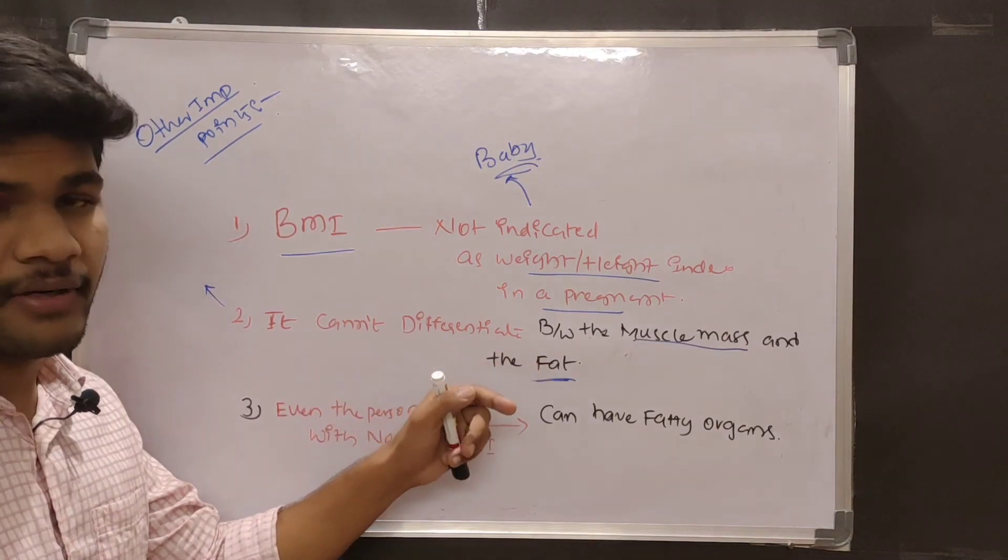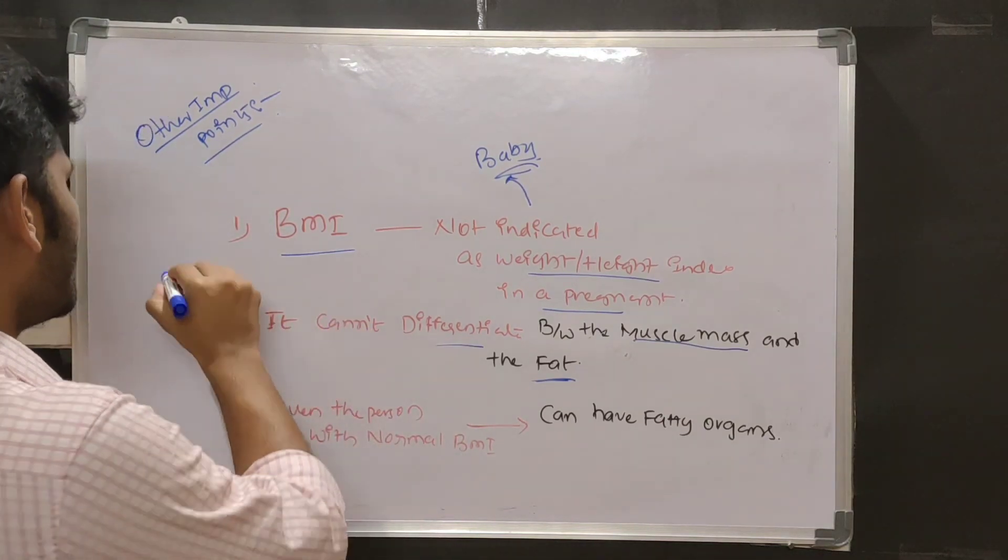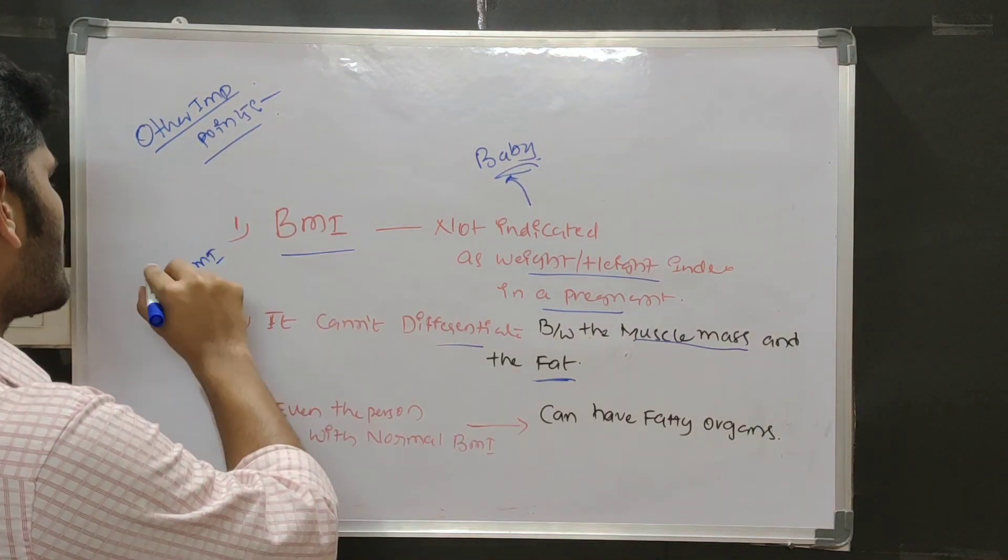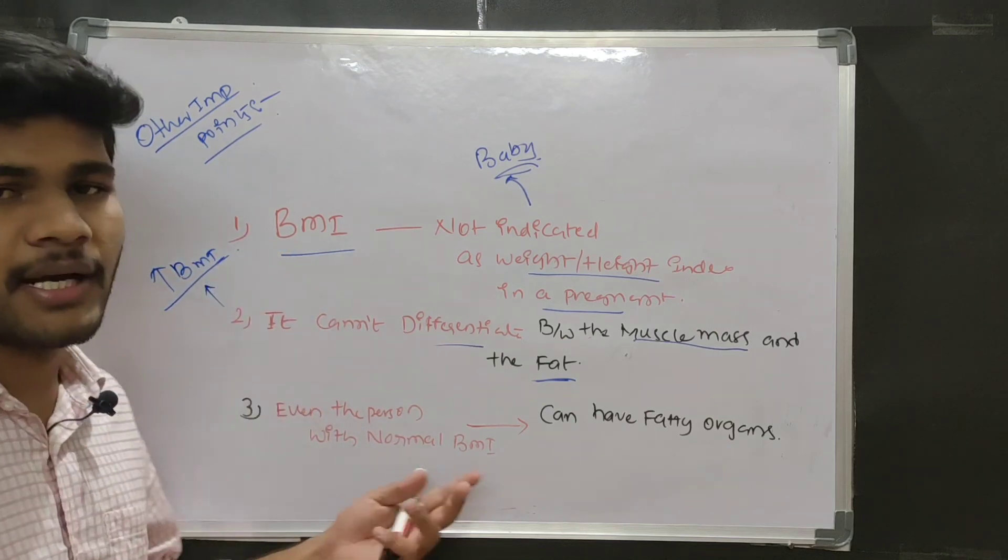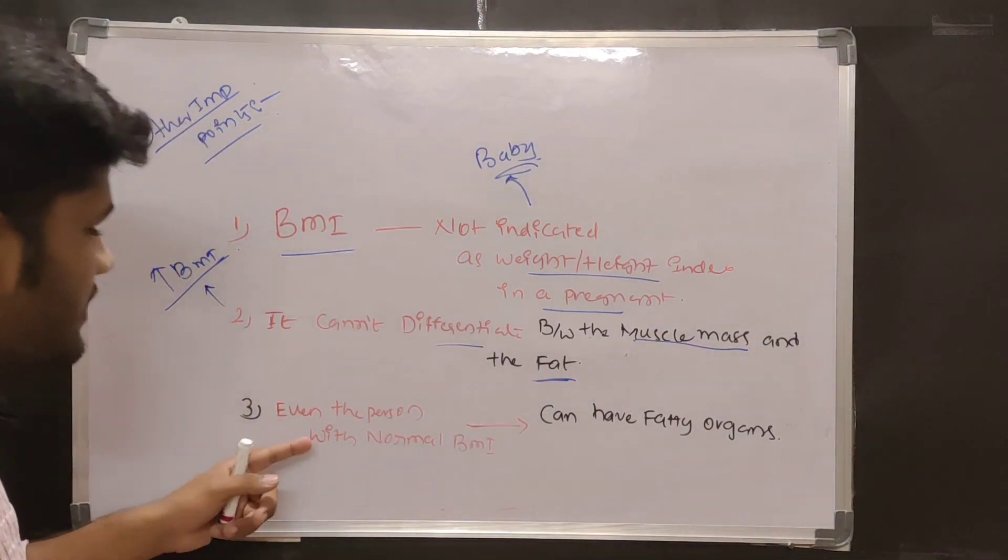And it cannot differentiate between muscle mass and fat. Some people may have good muscle mass but the BMI is high. So in this case we consider him as overweight, but he has muscle mass, not fat.